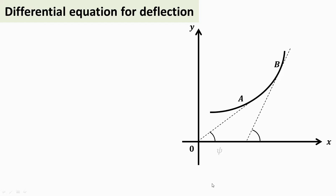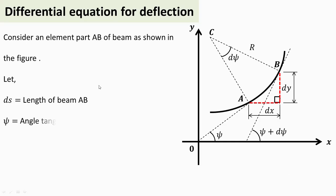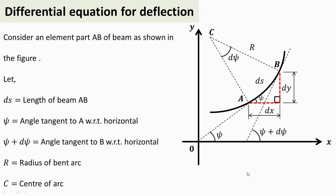In this video we'll see the differential equation for deflection. Here we have shown a very small part of the deflected beam, called AB, which has a very small length ds. Taking two points A and B, this curved element is as good as a straight line, giving us a right angle triangle. The small elementary horizontal length is dx and the small vertical distance is dy, so tan ψ equals dy/dx.